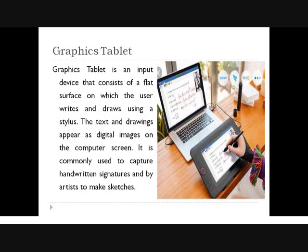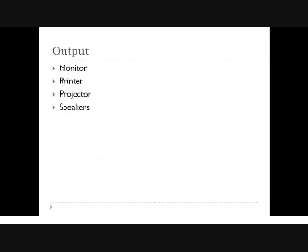The graphics tablet is an input device that consists of a flat surface on which the user writes and draws using a stylus. The text and drawings appear as digital images on the computer screen. It is commonly used to capture handwritten signatures and by artists to make sketches. The next topic — output devices — will be covered in the next class.